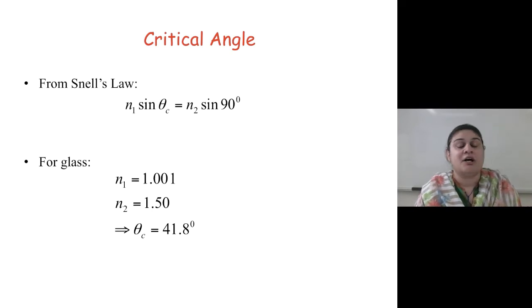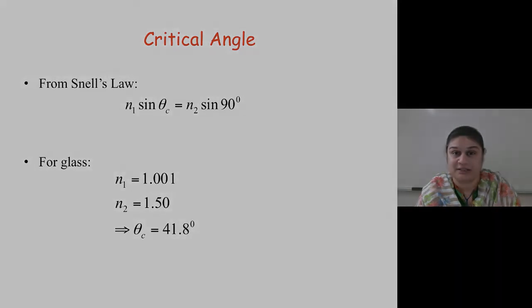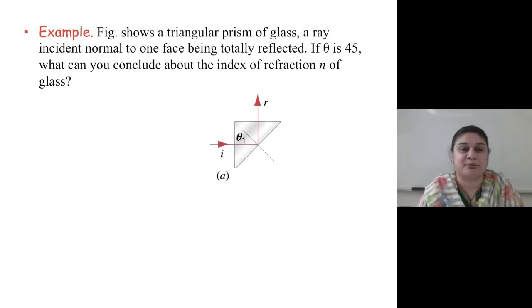Well, it depends on the medium. From Snell's law, we know N1 sine of theta 1 equals N2 sine of theta 2. So, for glass with N1 equals 1.0 and N2 equals 1.5, theta c is about 41.8 degrees. Now, let's do an example.